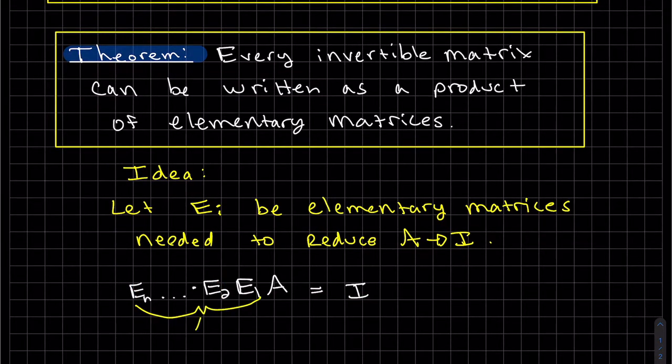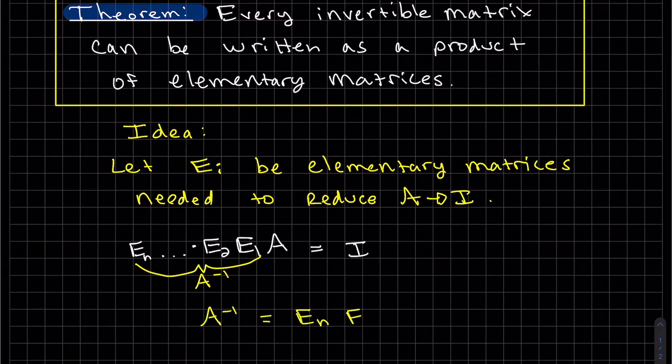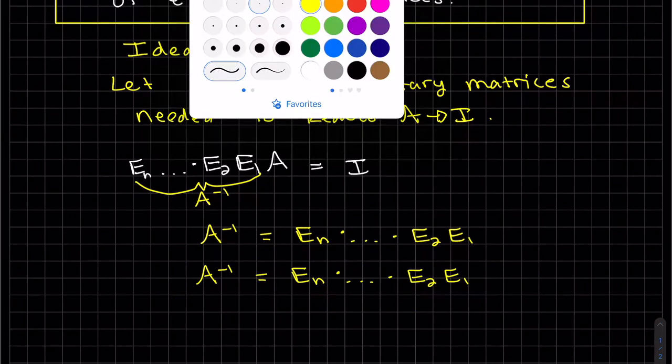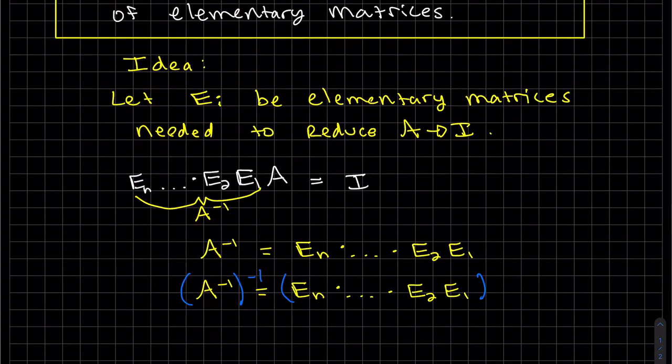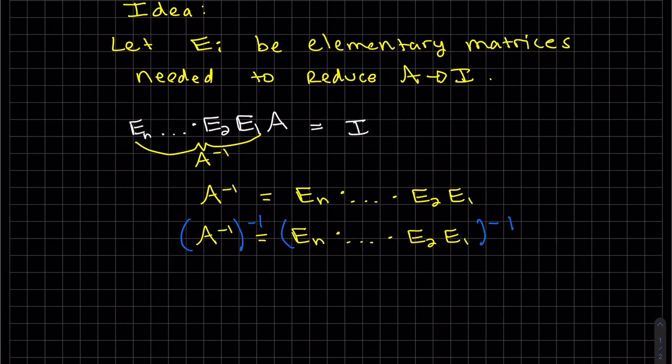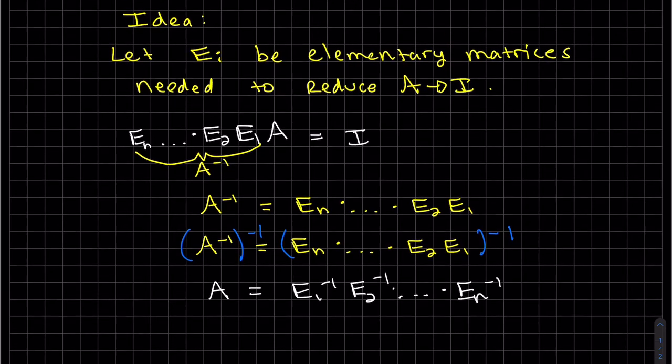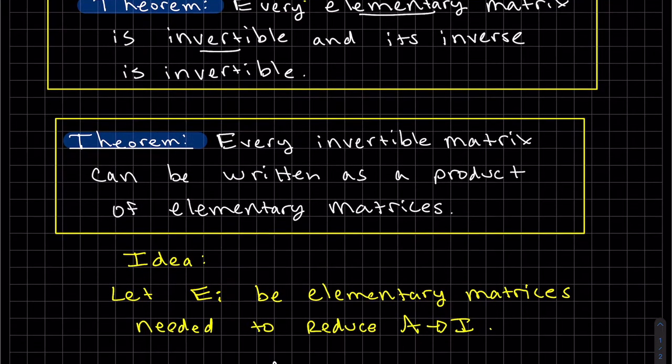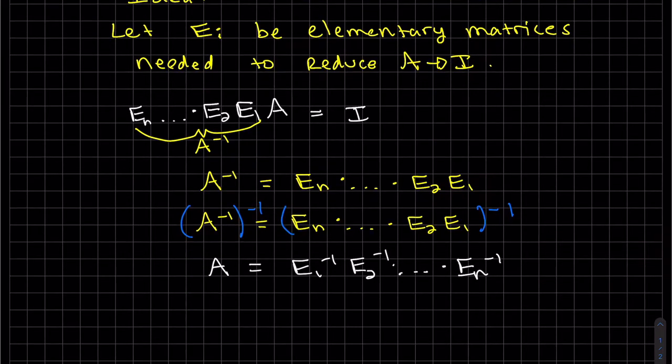That would mean this is our A inverse. So writing that out, take the inverse of both sides, and there you have it. A can be written as a product of elementary matrices. And we know that each of the elementary matrices are invertible, so we're allowed to do that.